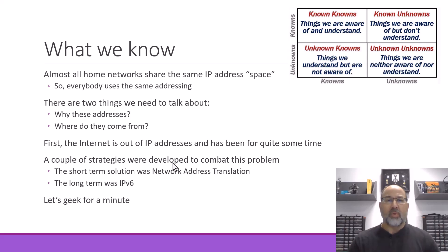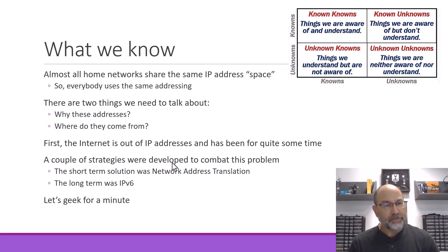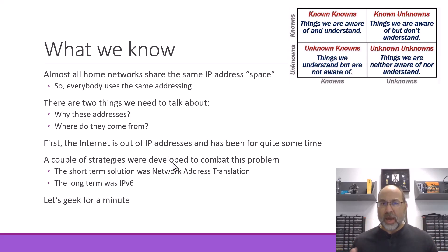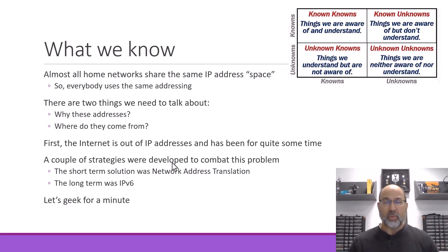Almost all home networks share the same IP address space. Now, if you've done networking at all, or if you just have an inkling of what IP addresses mean, IP addresses are supposed to be unique to a node — or are they? It turns out that almost every single home network and many small office networks use the same IP address space. Everybody's using the same addressing. So why are we using these addresses in particular, and how do we get away with all of us using the same ones?